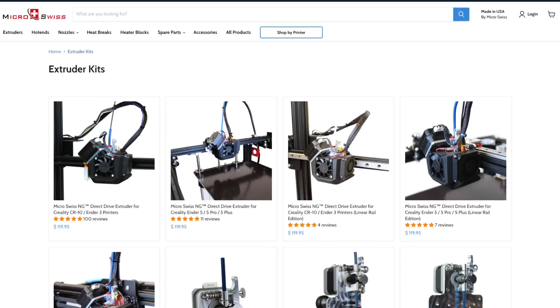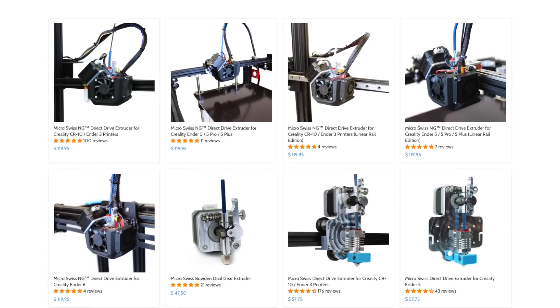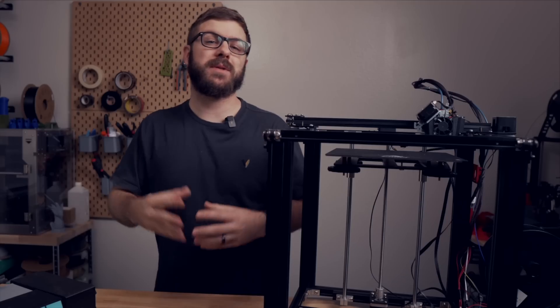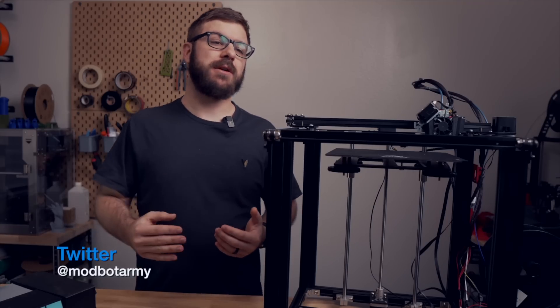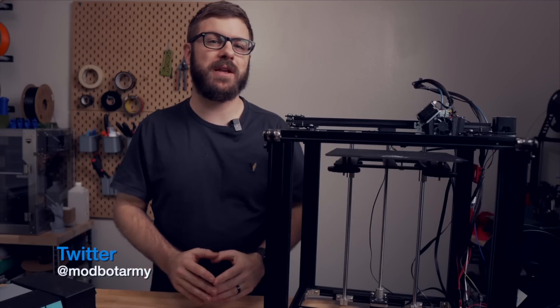Since it's launched, the NG line has expanded to have a front and top mount linear rail version, one for the Ender 6 and another version for Ender 5 style 3D printers. Micro Swiss reached out with interest in sponsoring an install video for their Ender 5 kit, so that is what we're gonna be doing in today's video.